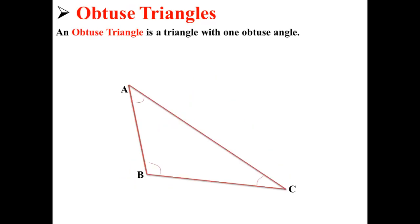And here we have an obtuse triangle. An obtuse triangle is a triangle with one obtuse angle.